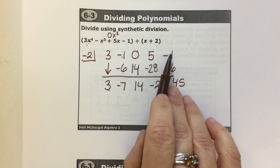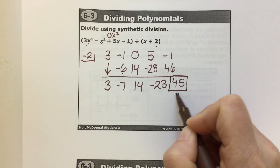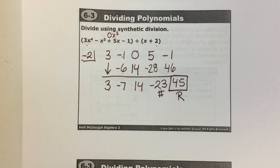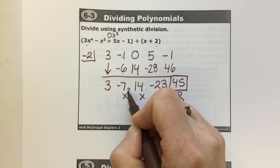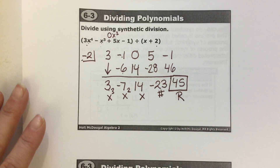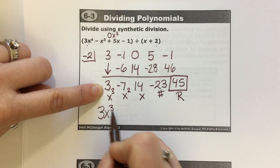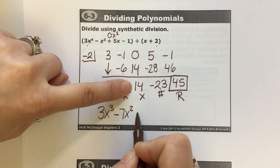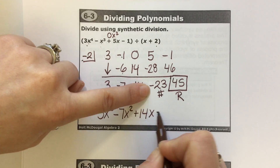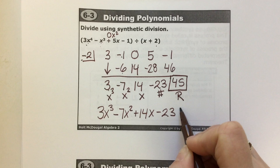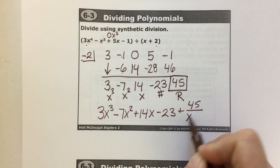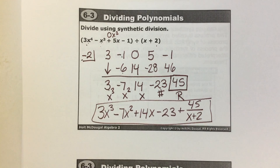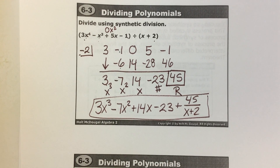I went through all the numbers. The last number is always the remainder, next to it is the constant, then 1x, then 2x's, then 3x's. So the final answer is 3x³ minus 7x² plus 14x minus 23, with a remainder of positive 45 over x plus 2. See how much quicker that is? Think back to long division — this is faster because you eliminate all the variables, only look at numbers during the process, then add the letters back in at the end.